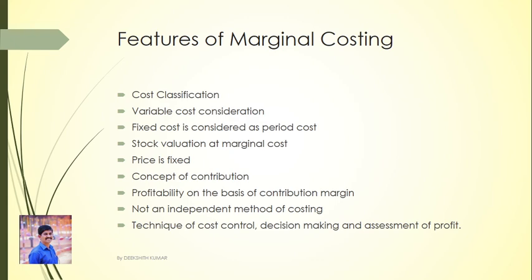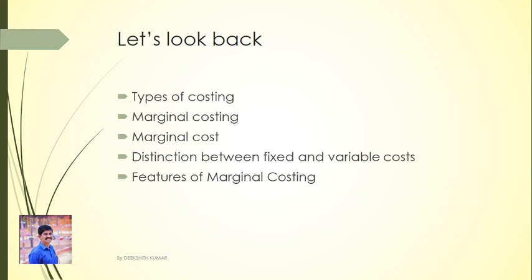Marginal costing is a technique of cost control, decision making, and assessment of profit. To recap, the important features of marginal costing are: cost classification, variable cost consideration, fixed cost as period cost, stock valuation at marginal cost, price fixation, concept of contribution, profitability on the basis of contribution margin, not an independent method of costing, and technique of cost control, decision making, and assessment of profit.